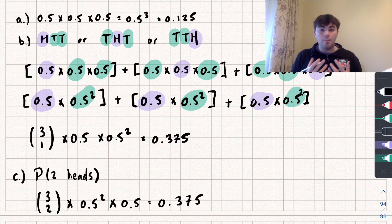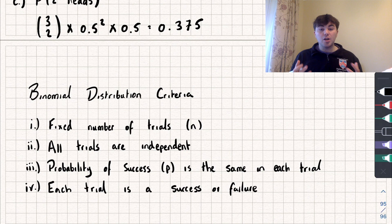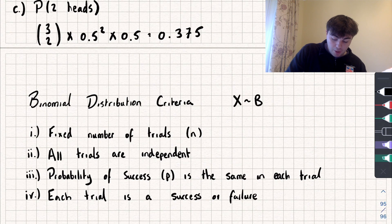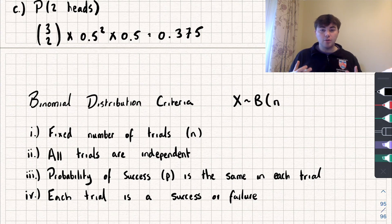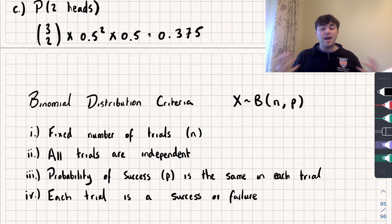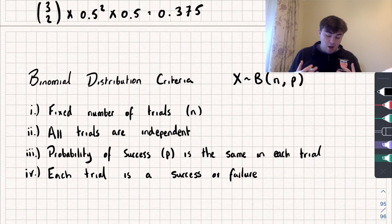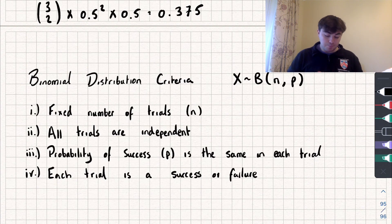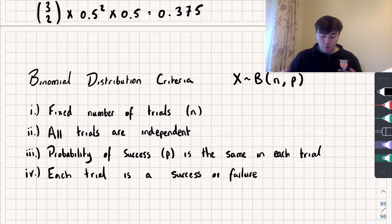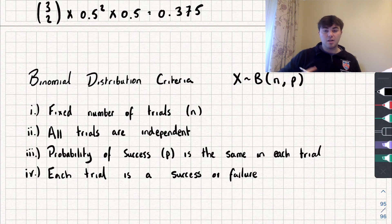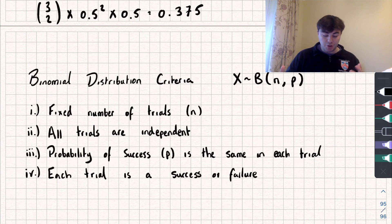Now let's introduce the binomial distribution more formally. We write that our random variable X follows a binomial distribution B(n, p), where n is the number of trials and p is the probability of success. For something to be a binomial distribution, we need: a fixed number of trials n; all trials to be independent; the probability of success p to be the same in every trial; and each trial to result in either a success or a failure.